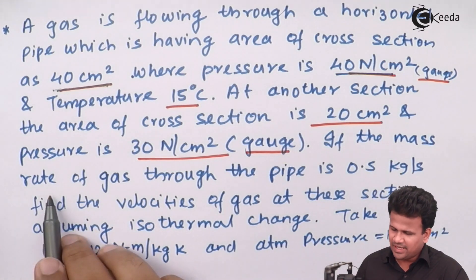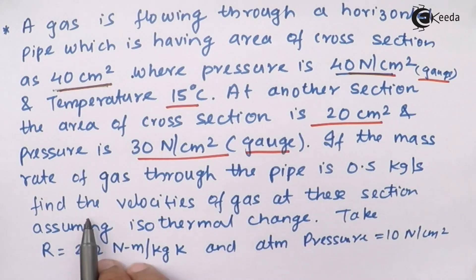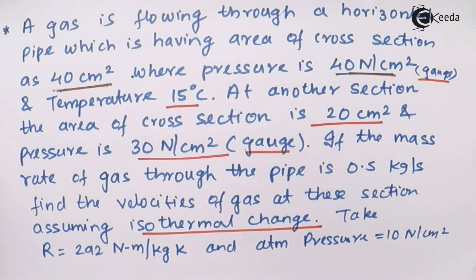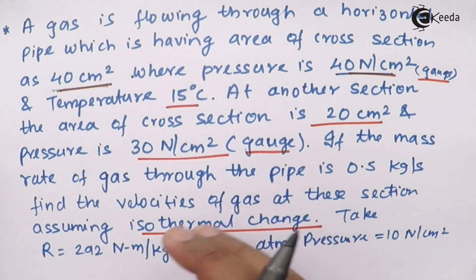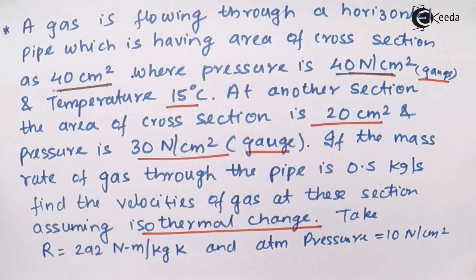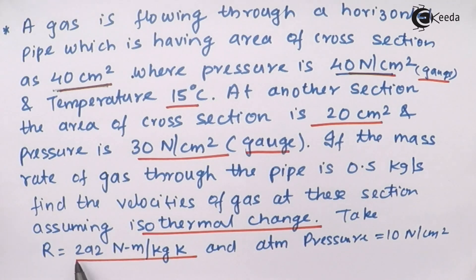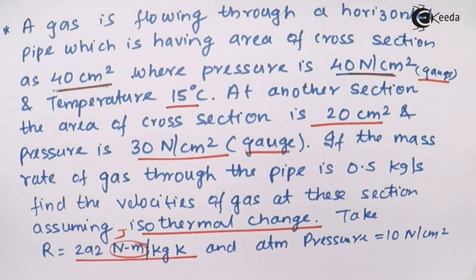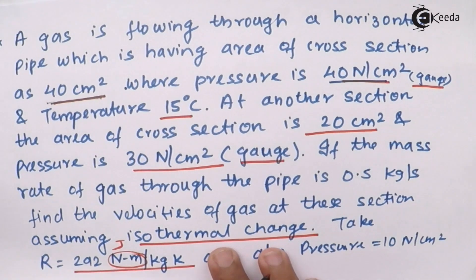If the mass flow rate of the gas through the pipe is 0.5 kg/s, find the velocities at the sections assuming it is an isothermal change. Isothermal change means temperature remains constant, so the temperature at the inlet and the outlet is 15 degree Celsius. The universal gas constant R is given as 292 Newton meter per kg Kelvin and atmospheric pressure is 10 Newton per centimeter square. All these data is given to us.